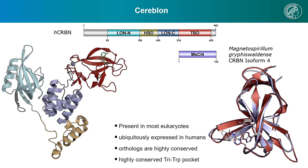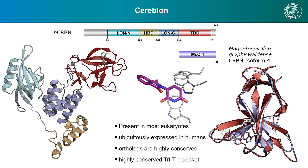Cereblon acts as the substrate receptor of the CRL4 Cereblon E3 ligase complex. It is present in most eukaryotes and ubiquitously expressed in humans. For us, the most important domain is the C-terminal thalidomide binding domain, short TBD, of which orthologs are highly conserved. We are also working with the single-domain bacterial homolog referred to as MsCrbn. Both of them are structurally highly similar, as you can see on the right by their superposition, and both possess the highly conserved tri-tryptophan aromatic cage by which the classic immunomodulatory drugs are able to bind.